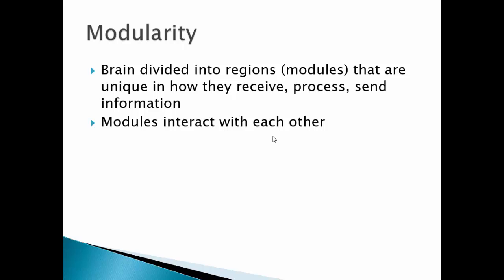Modularity is a more modern view that says the brain is divided into regions or modules. These modules are unique in how they receive, process, and send information, but they also interact with each other. What happens in one part of the brain doesn't happen in isolation — there is modularity but also interconnection.